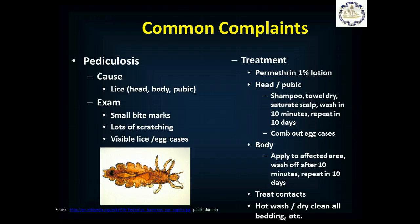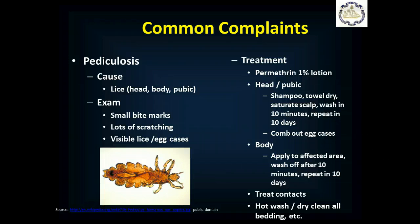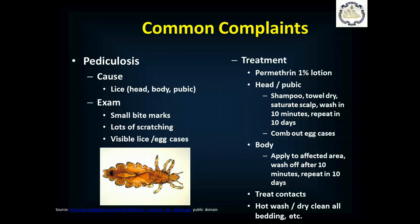Pediculosis is lice. You can get lice on the head, in the body hair, and in the pubic hair — in the pubic hair it's known as crabs, and it's considered a sexually transmitted disease. Lice anywhere is really person-to-person transmitted. On your exam, you'll find a patient who's scratching a lot, has small bite marks on their body, and sometimes visible lice — that's a louse you see just below there — or egg cases, the nits, particularly in longer hair. Treatment is permethrin 1% lotion. For head or pubic lice, shampoo the hair, towel it dry, then saturate that area, wash it off in 10 minutes, and repeat the treatment in 10 days. Comb out any egg cases with a fine-tooth comb. On the body, apply it to the affected area, wash off after 10 minutes, and repeat in 10 days.